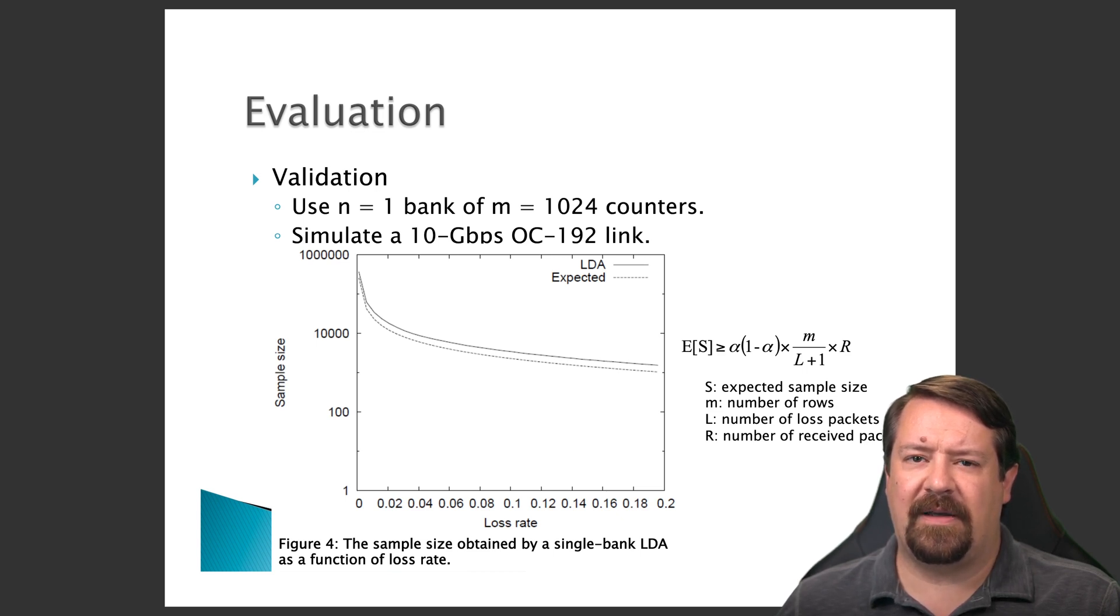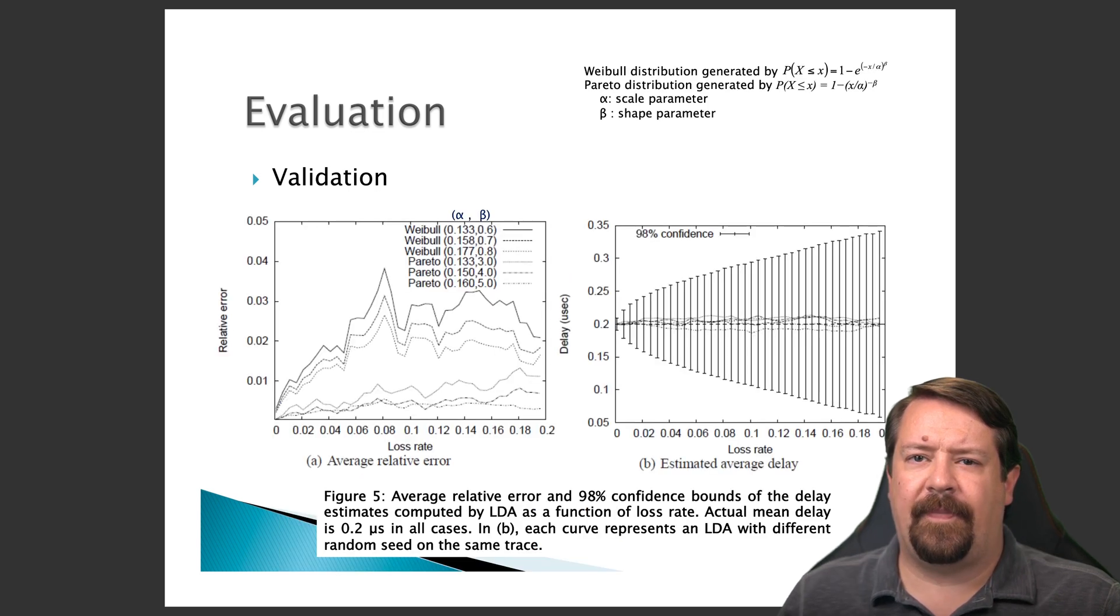In general, as we would expect, we see that as the loss rate increases, the number of samples that are successfully measured by the receiver decreases. The authors also tried using different distributions to generate their loss rates because some links are more likely to have burst losses as opposed to randomly distributed losses.